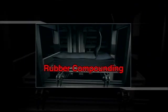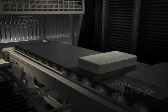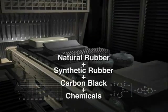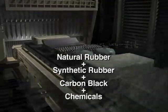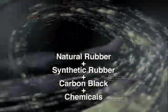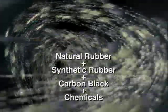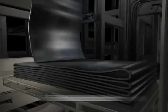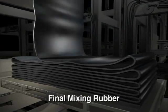Mixing is the first of many important processes in tire manufacturing. The tire's main material, natural or synthetic rubbers, is mixed like the dough for a cake, along with oil, sulfur, and many other additives. This step is used to make the rubber compound, which results in the final mixing rubber.